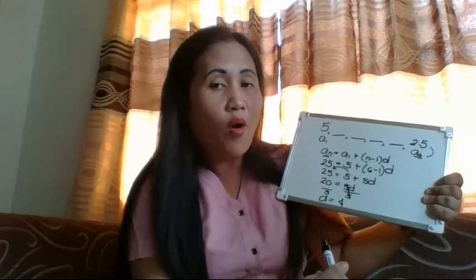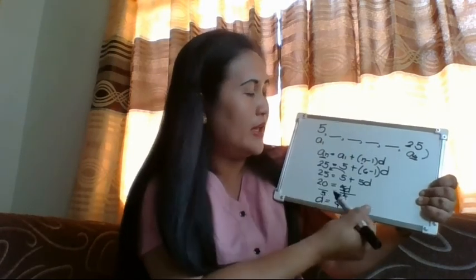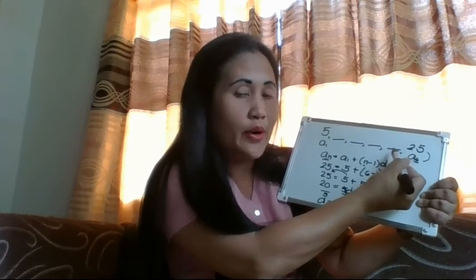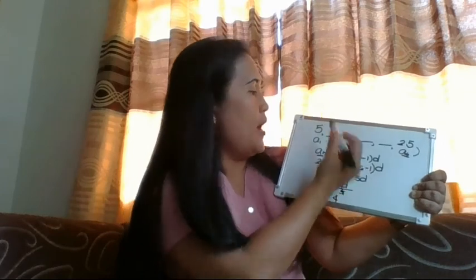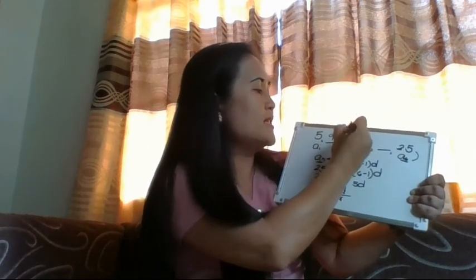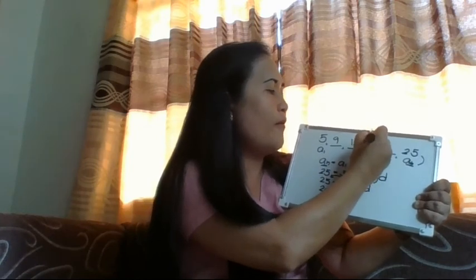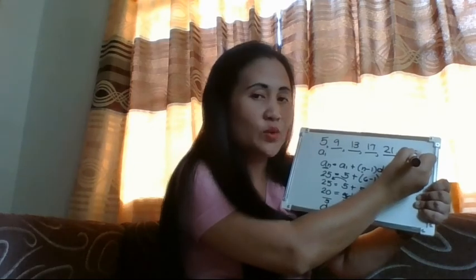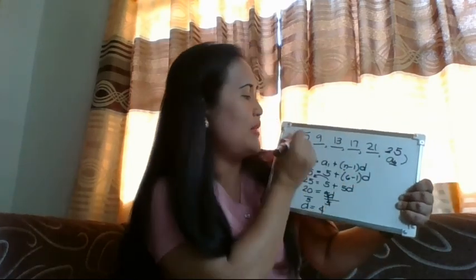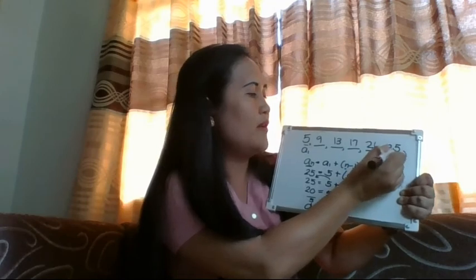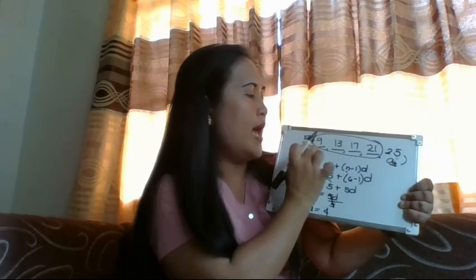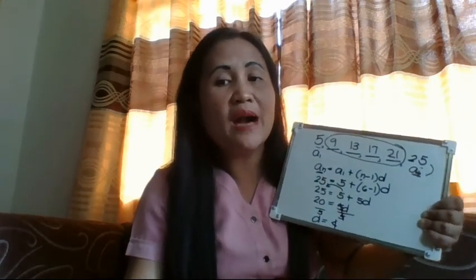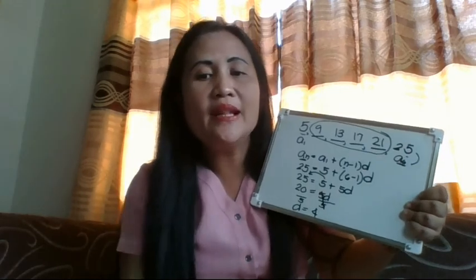With a common difference of 4, we just add 4 to each preceding number: 5 plus 4 is 9, plus 4 is 13, plus 4 is 17, plus 4 is 21, plus 4 is 25. So the four arithmetic means between 5 and 25 are 9, 13, 17, and 21.